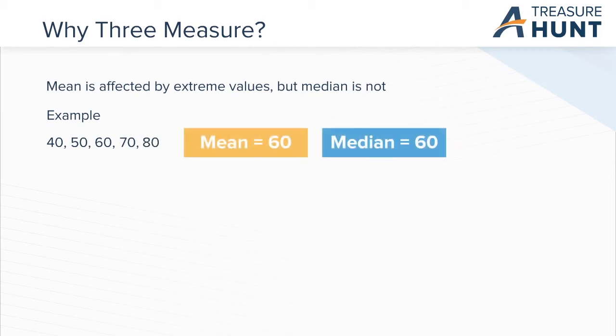Both the mean and median for this data set is 60. If only one number changes, say the 80 becomes 180, the mean changes to 80 while the median remains at 60. As you can see, the presence of an extreme value affected the mean, but not the median.